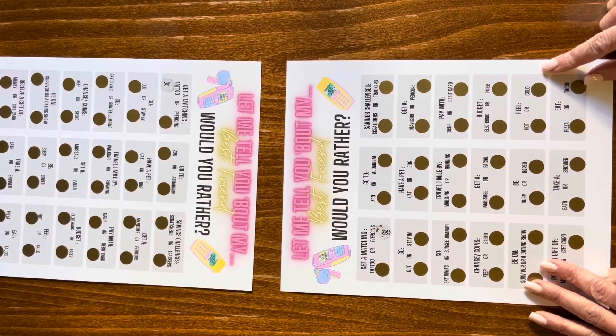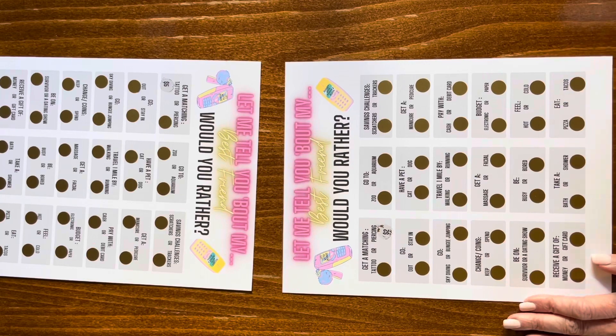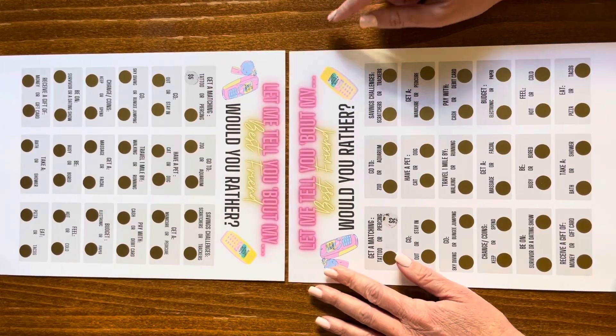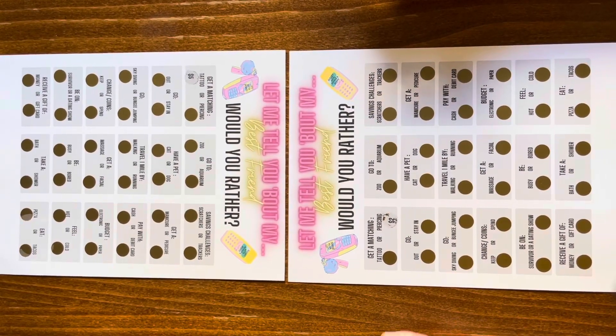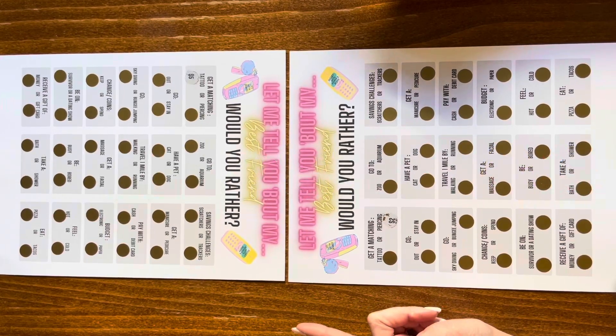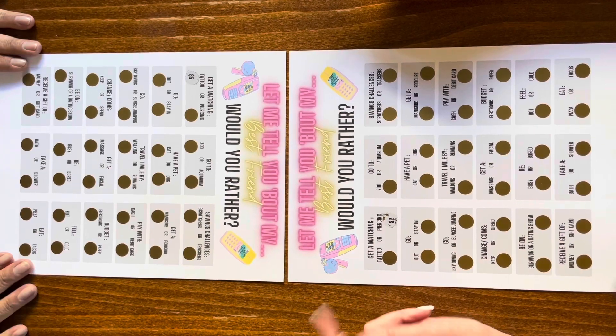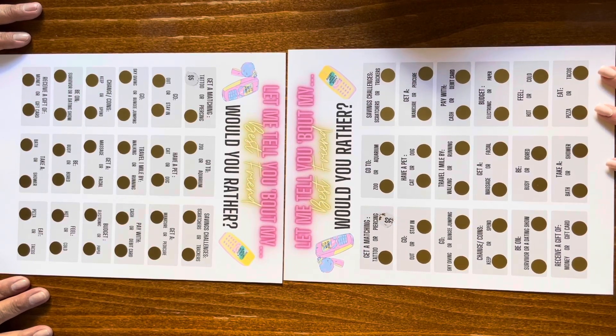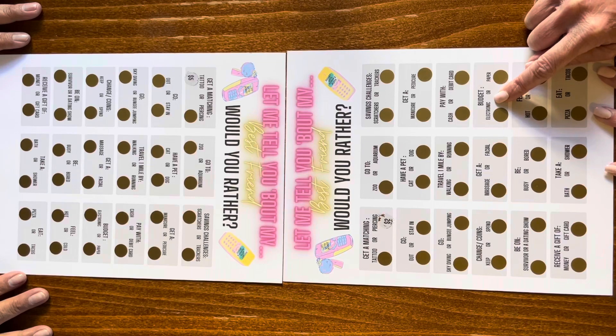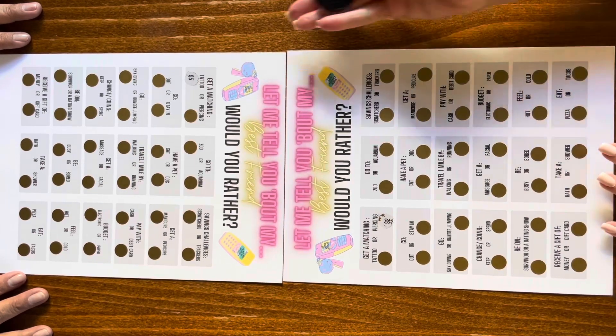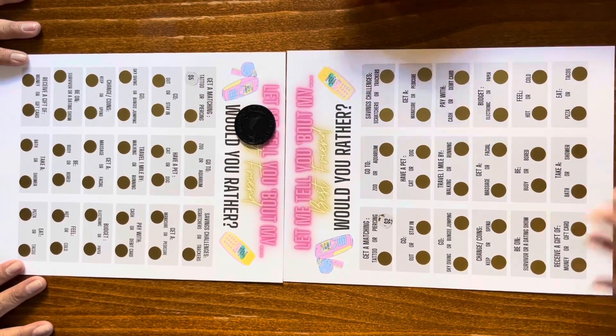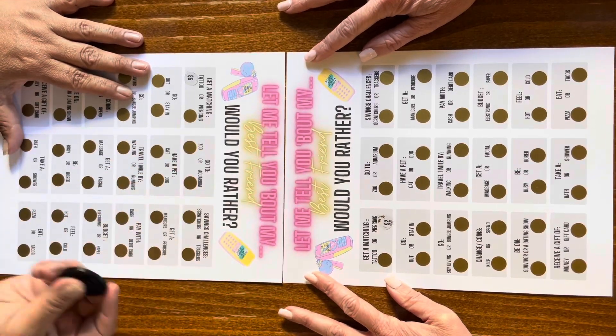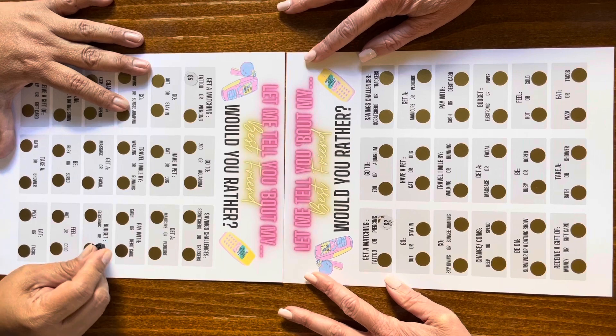Now we are moving on to Budget Bestie Would You Rather. This is a collab between us and Life with Bobby, Bobby and Life with Bobby. I'm really bad about this in my videos, I call people by their channel names. Bobby wanted to do the question: would you rather electronic budget or paper budget? I need to touch things so I think I'm gonna go with the paper.